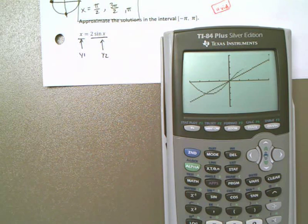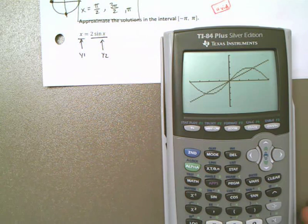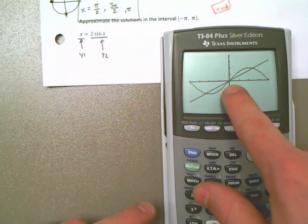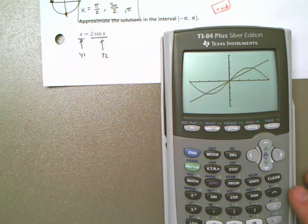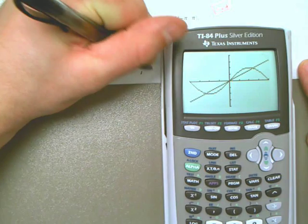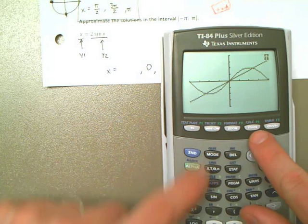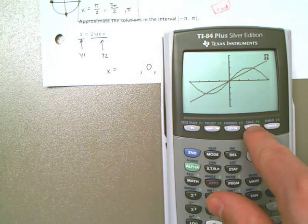Here comes y equals x. There it shows up. Here comes 2 sine of x. And I can see that they meet in three locations. The three locations that they happen to meet at, now approximate means we're going to round it to like a decimal. We're going to get a decimal answer here. But I can see that they meet right at 0, right? So I'm going to put 0 as one of my solutions. x can be 0. That's the middle one. But it's also going to have two others.